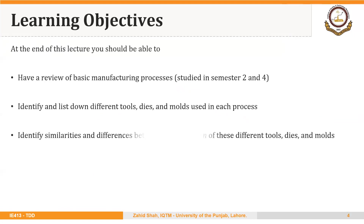So here we will review basic manufacturing processes that we have already discussed in semester two and semester four. Specifically, we would like to identify and list down different tools, dies, and molds that are used in each process. And I would like to encourage you to focus on the configuration of dies and molds in different processes.